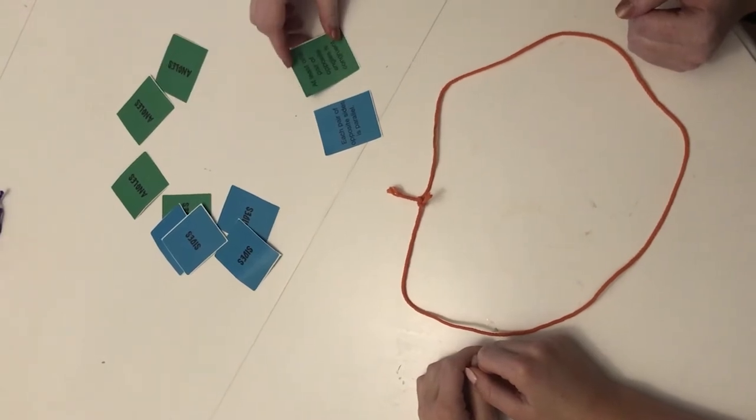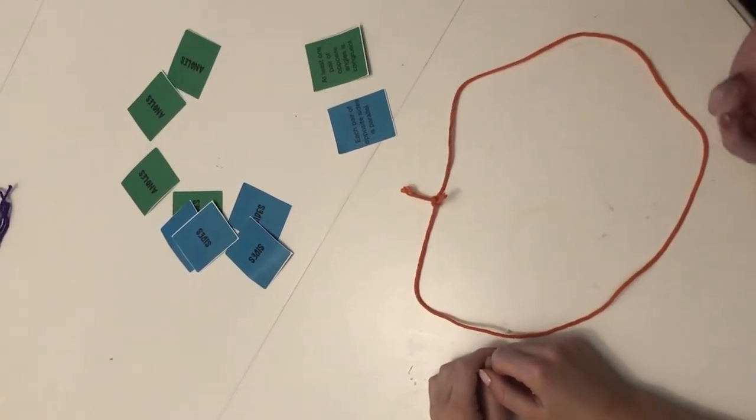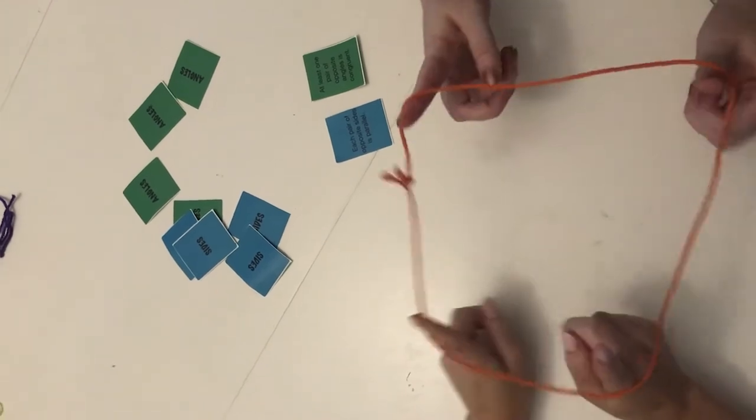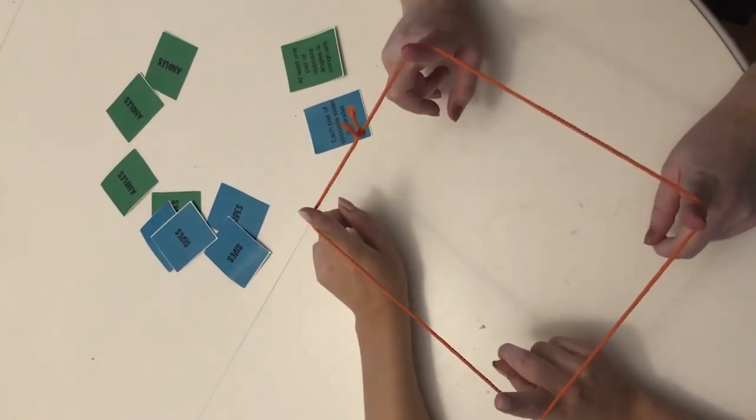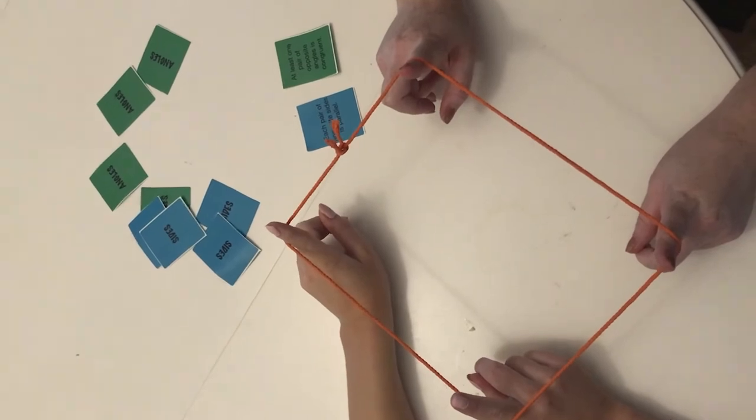Each pair of players gets one string. Begin the game by flipping over one angle property card and one side property card. Using those two property cards, all pairs try to create as many different types of quadrilaterals as possible.